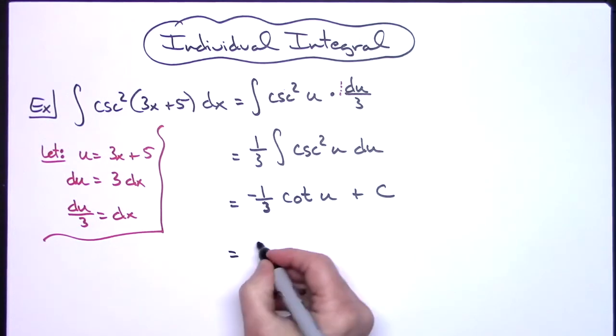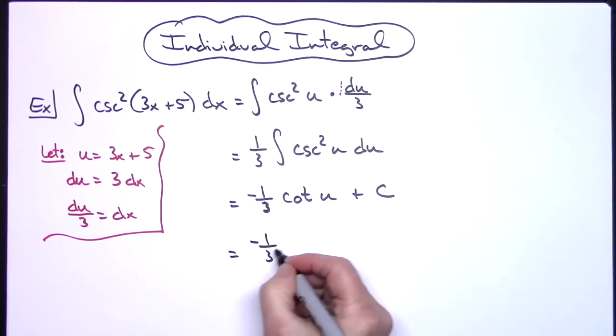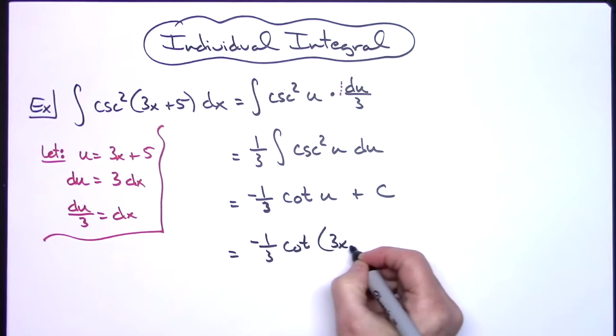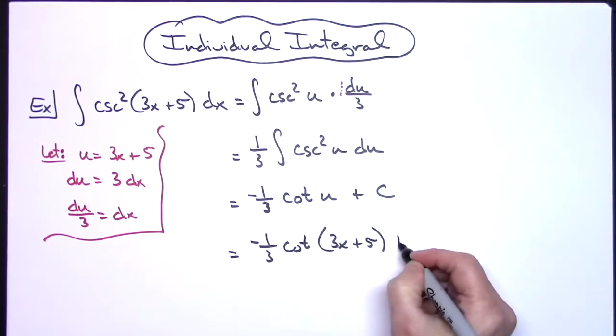The last step would be to take that u and replace it with what we have there, so it'll be negative 1/3 cotangent of (3x + 5) plus C.